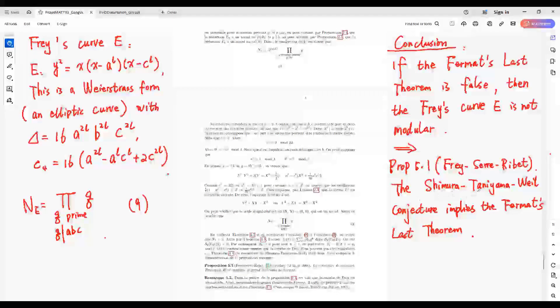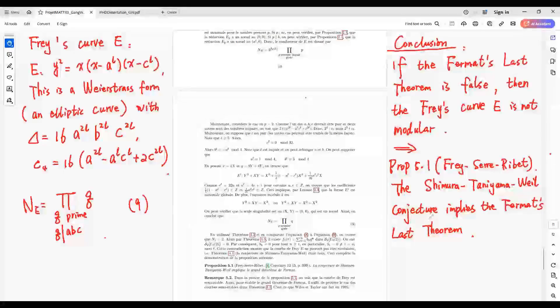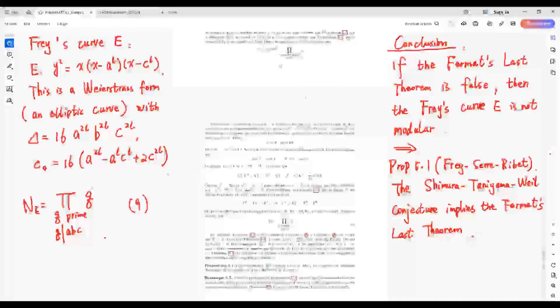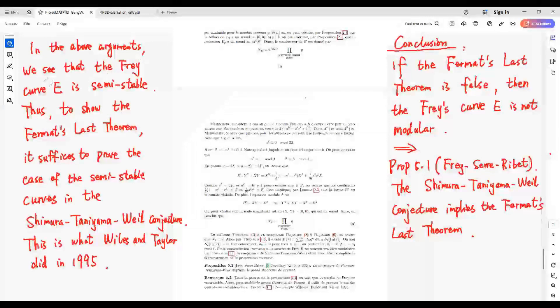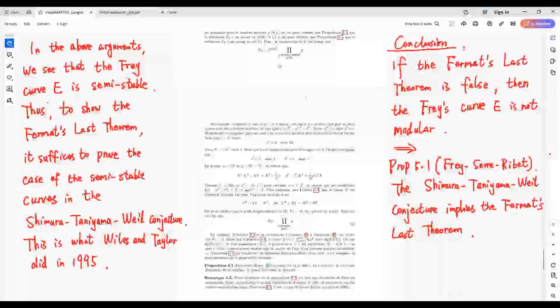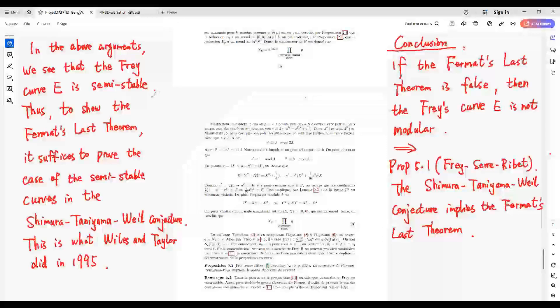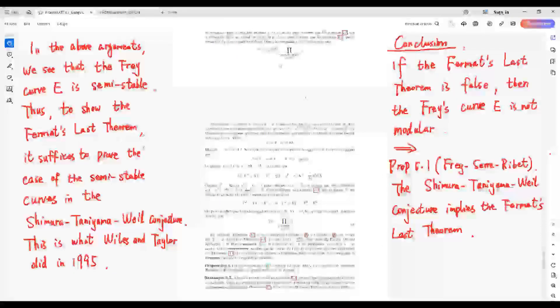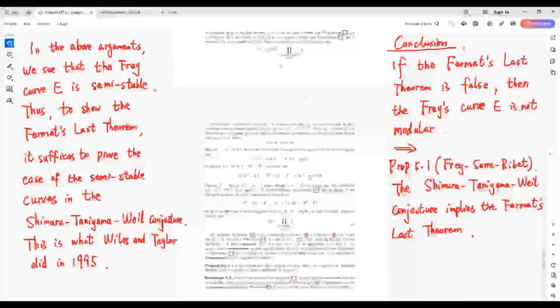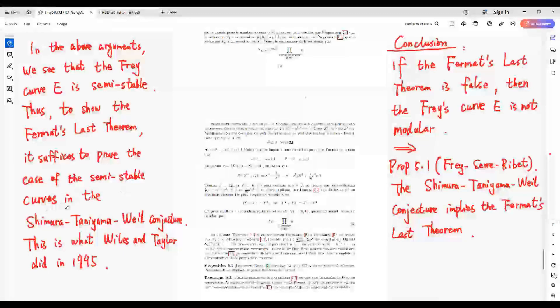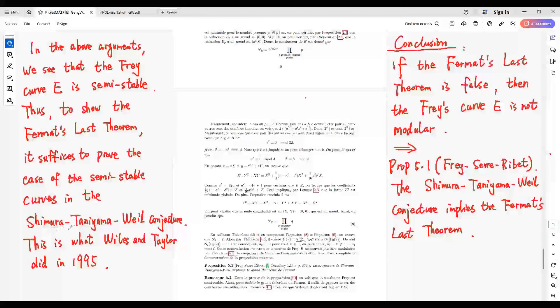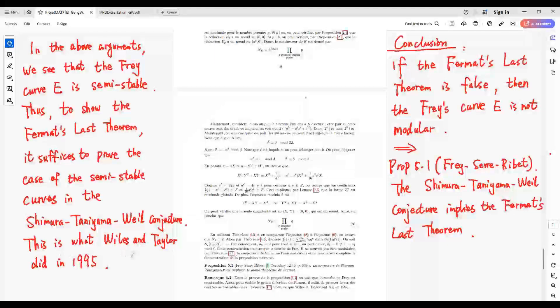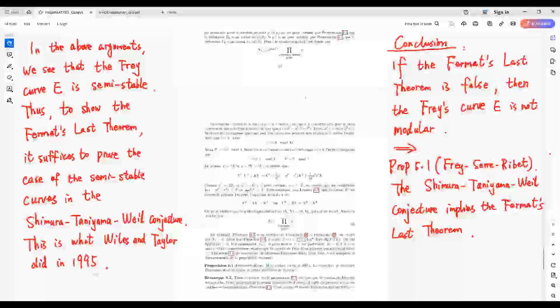The Shimura-Taniyama-Weil conjecture implies Fermat's Last Theorem. In the above arguments, we see that the Frey curve E is semi-stable. Thus, for showing Fermat's Last Theorem, it is enough to prove the case of semi-stable curves in the Shimura-Taniyama-Weil conjecture. This is what Wiles and Taylor did in 1995.